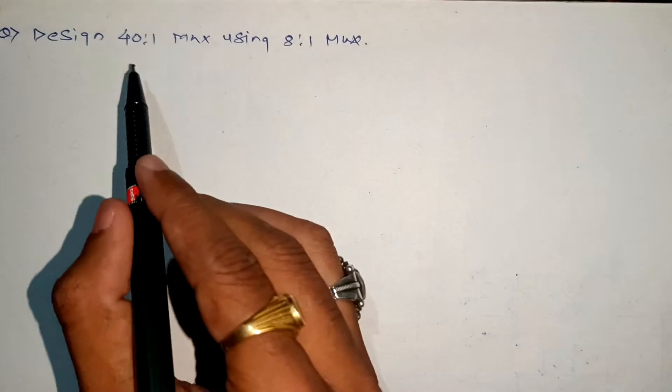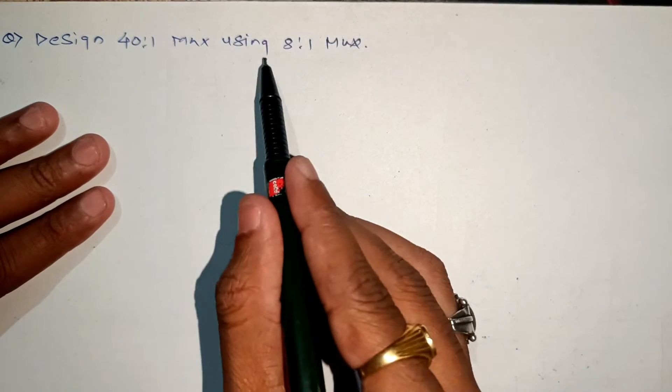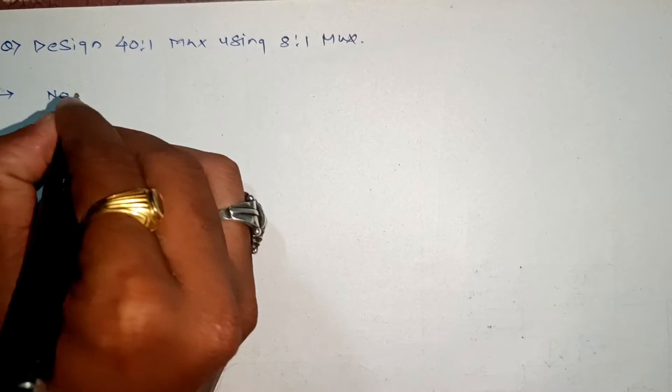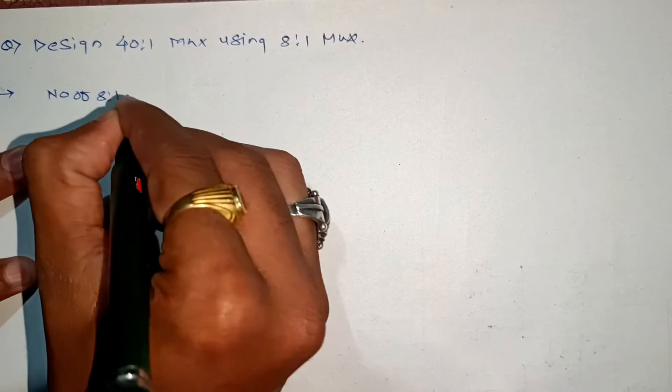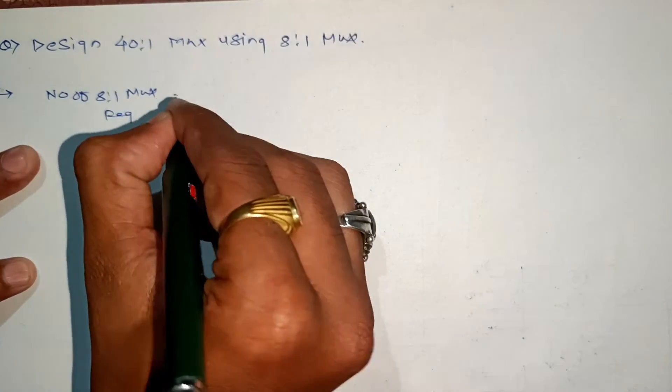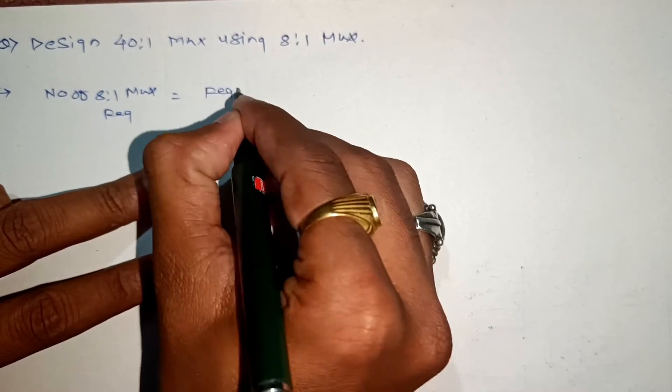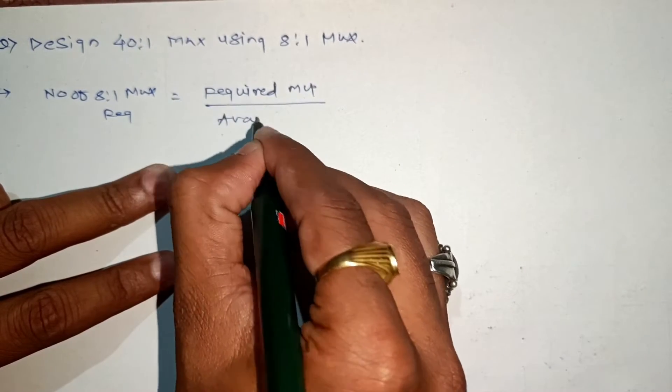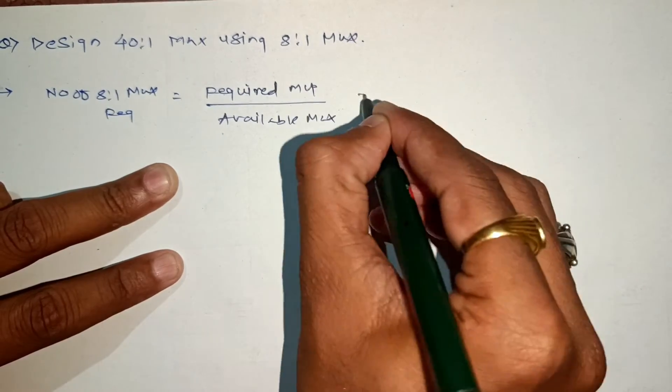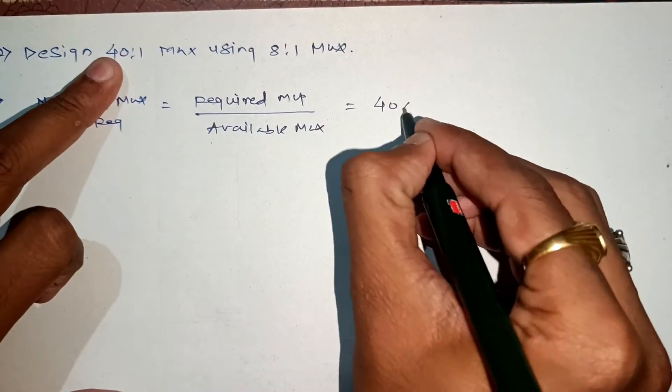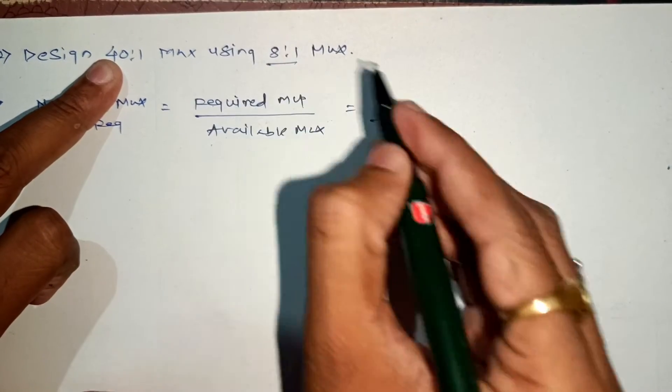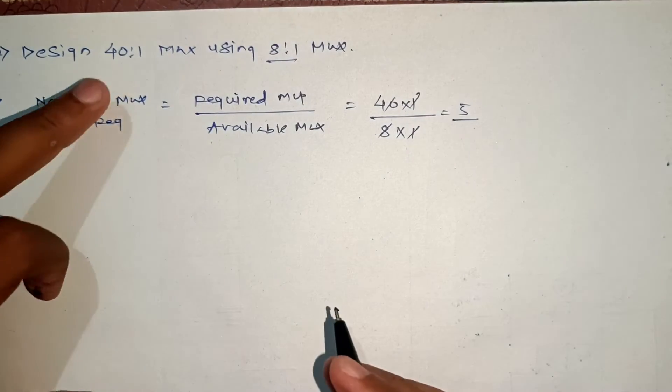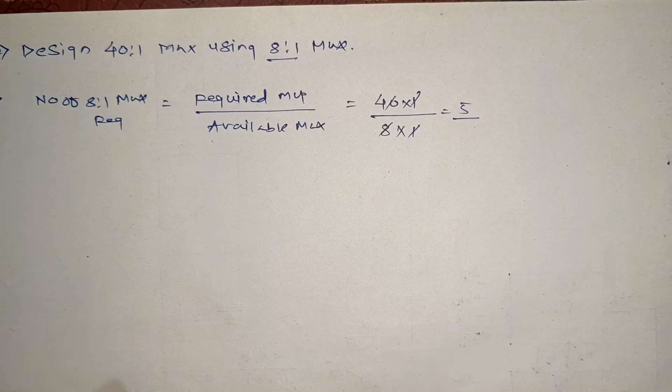The second question is how can you design a 40 to 1 mux using 8 to 1 mux. Let us start with the same steps. First, number of 8 by 1 mux required. The formula is required mux divided by available mux. We have to design 40 by 1 using available 8 by 1, so we divide 40 by 8. Five will get cancelled, so in the first stage we need 5 muxes.